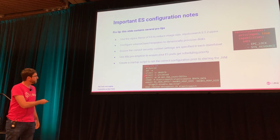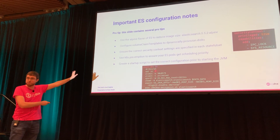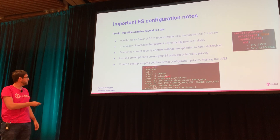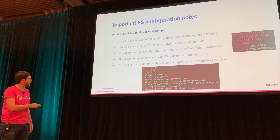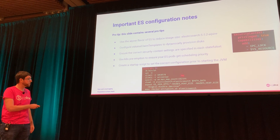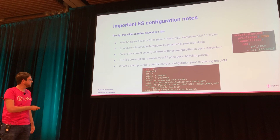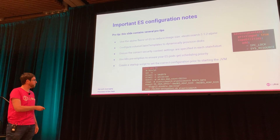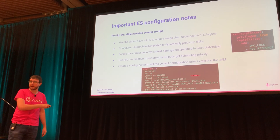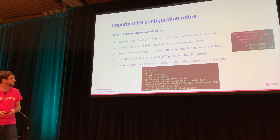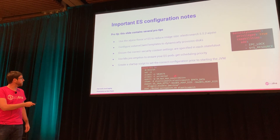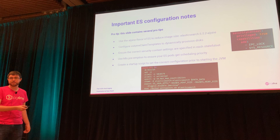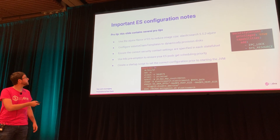There is a startup script that we have. It sets file handle limits, sets the max map count for VM — this is in the Elasticsearch documentation. We set some file permissions, and of course set the heap size for Java before we start the Elasticsearch application itself. We could not run it without the VM max map count — it just doesn't work. It's in the documentation, but it's really easy to miss.